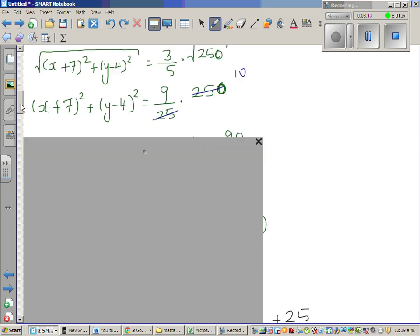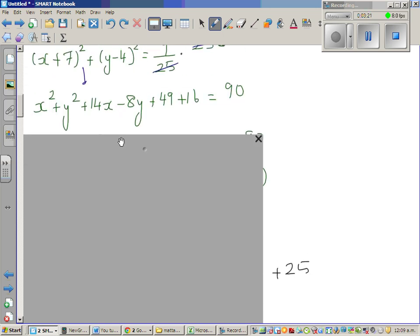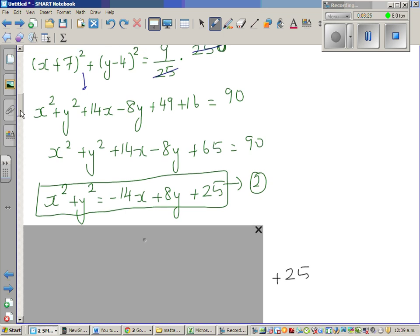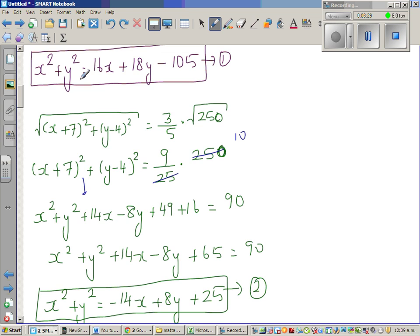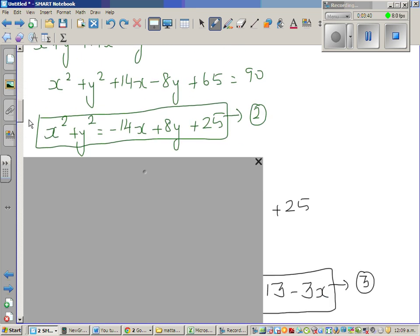Again, this is the expansion of this. You can check that yourself. Again, expanding this, ultimately you get this. So you've got 2 equations, equation 1 and equation 2. Equation 1, the left hand side is x² + y², and equation 2 also has left hand side x² + y². So I hope you can see what my next step would be.